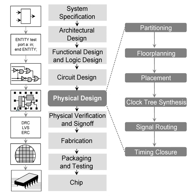Fab houses fabricate designs onto silicon dies which are then packaged into ICs. Each of the phases mentioned above has design flows associated with them. These design flows lay down the process and guidelines, framework for that phase. Physical design flow uses the technology libraries that are provided by the fabrication houses. These technology files provide information regarding the type of silicon wafer used, the standard cells used, the layout rules like DRC in VLSI, etc.